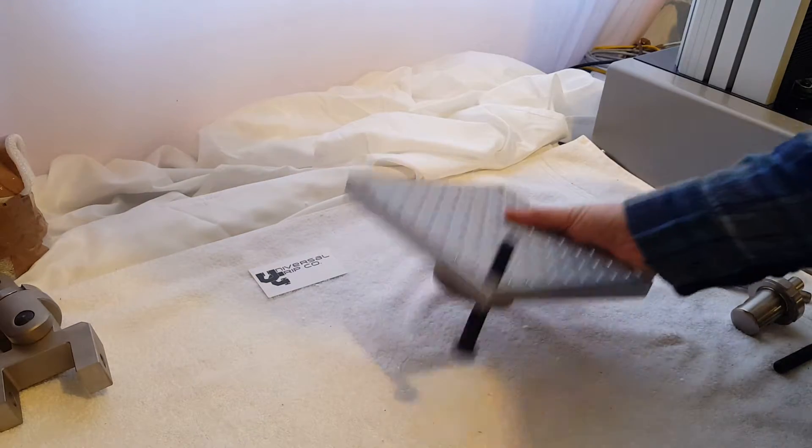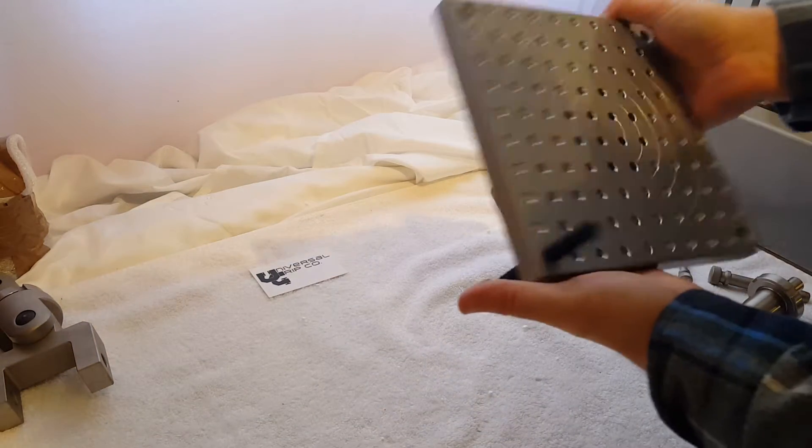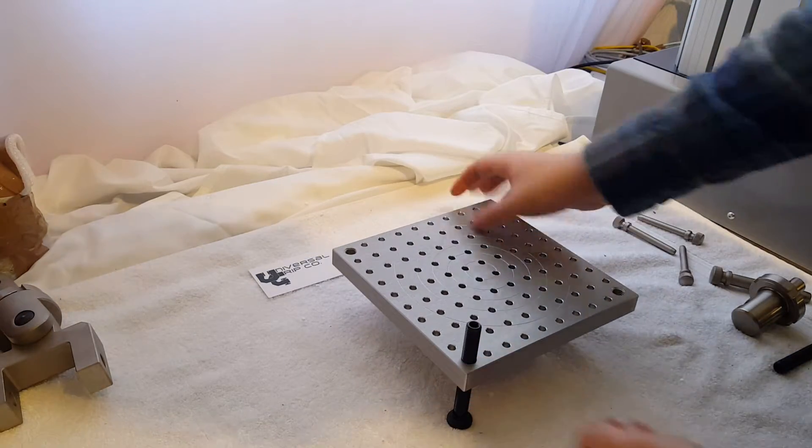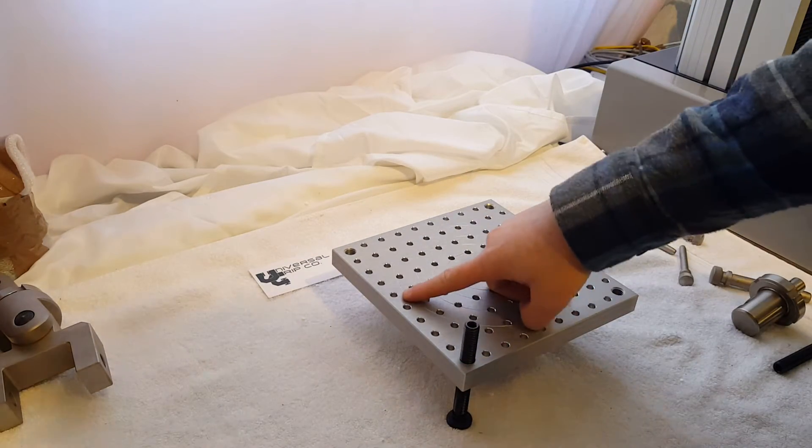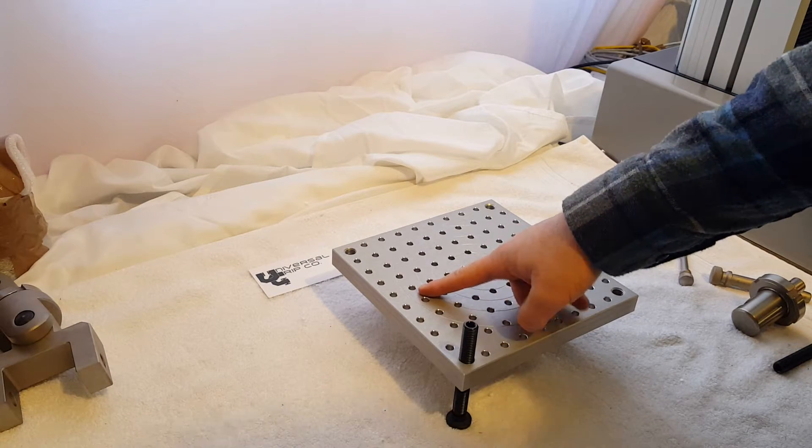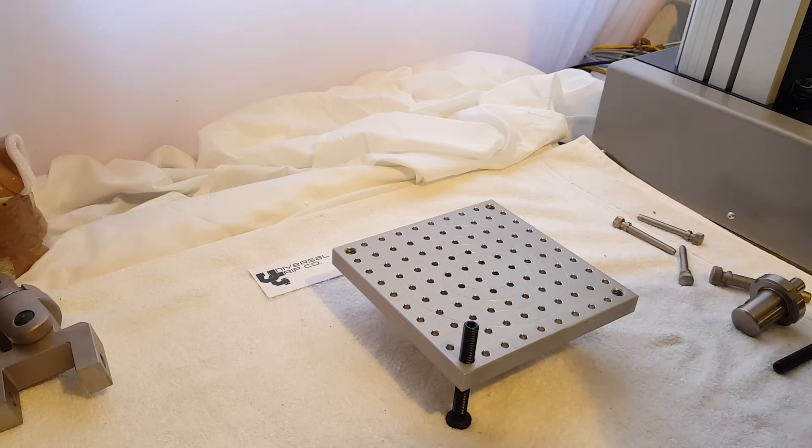So again, this is a compression table or compression platen for ASTM D3574. It has the holes drilled in it about 20 millimeters apart, 6 millimeters in diameter for the holes.